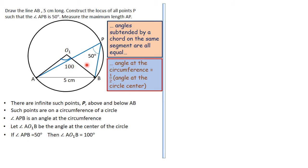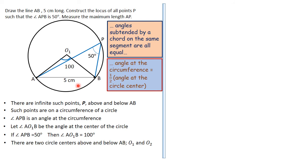We found the angle at the center O₁ so we can stand there with our compass and draw the circle that passes through A and B, making AB a chord. There are two circle centers — O₁ above AB and O₂ below AB — each giving a circle that satisfies the locus of P.